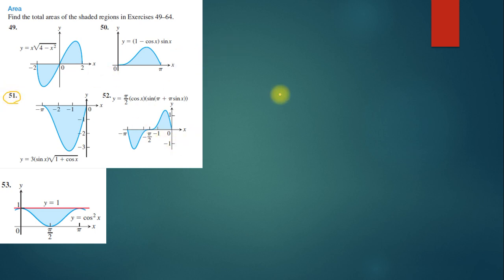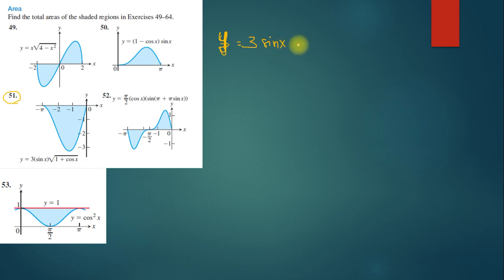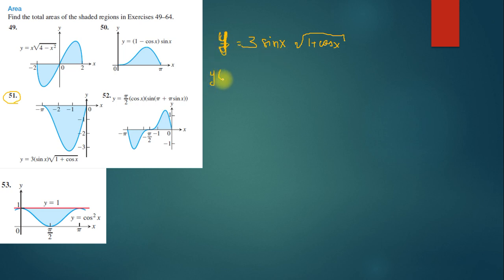For exercise 51, we have the function y = 3sin(x)√(1 + cos(x)). We need to check again whether this is an odd function. To check if a function is odd, substitute -x: if you get -f(x), the function is odd.